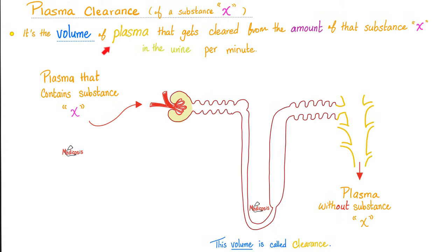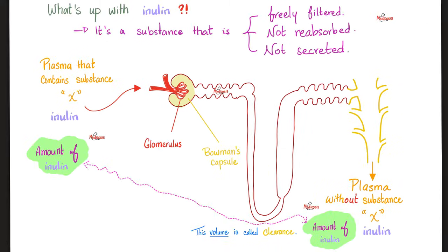Plasma clearance is the volume of plasma that gets cleared and cleaned of any waste X by your kidney per minute. Plasma with the waste going in, plasma without the waste going out to the blood. The volume of plasma that got cleared is the clearance — not the volume of the waste. We can exploit the concept behind plasma clearance to measure your GFR.